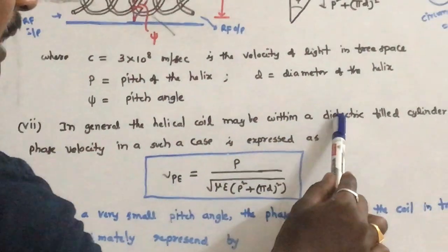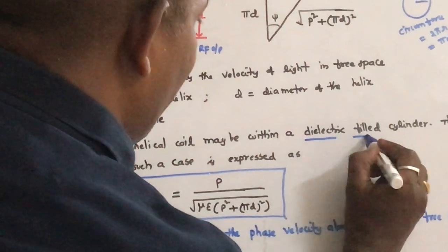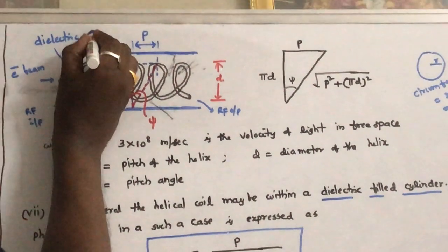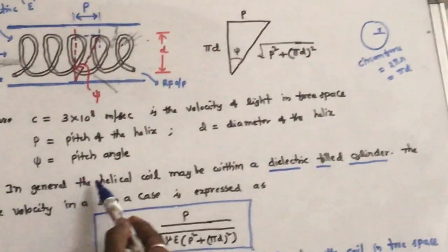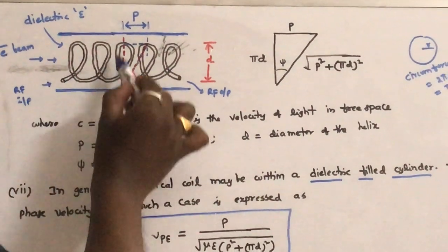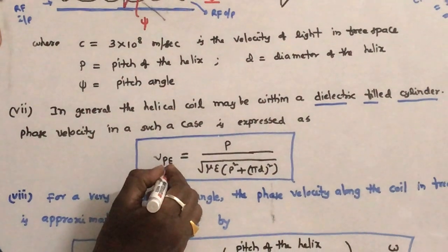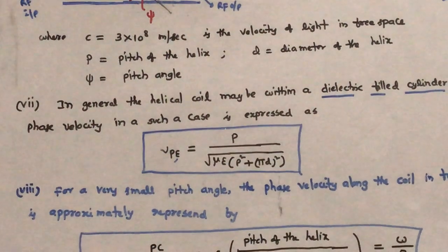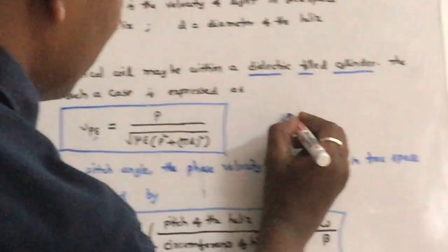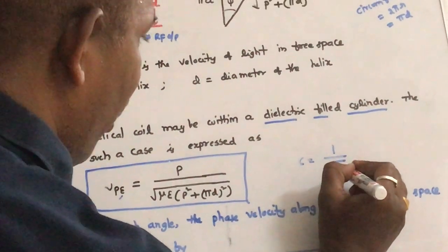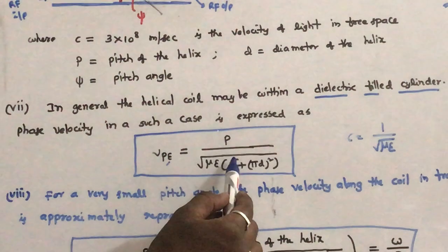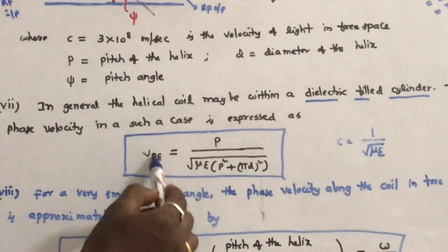In general, the helical coil may be within a dielectric-filled cylinder with dielectric constant ε. In that case, the phase velocity is modified. As you know, the velocity c = 1/√(μ₀ε₀) in free space, and in any other medium the velocity is 1/√(με). So in place of c, write 1/√(με). Therefore, this gives the phase velocity when a dielectric medium is present in the tube.